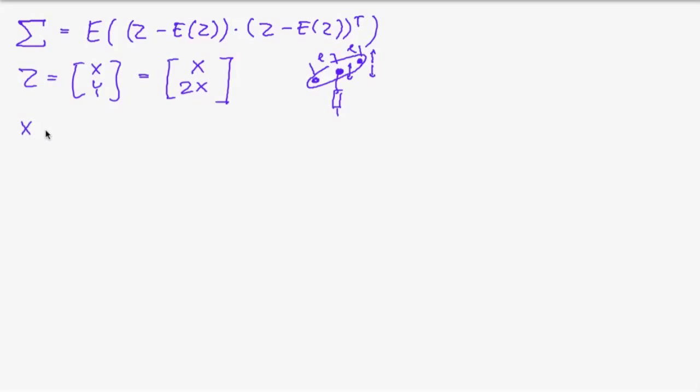And so we knew that x was normal distributed with expectation 0 and variance σx squared. And so from that we see that the expectation of x was of course 0. And so from that it follows that the expectation of C is 0, 0.